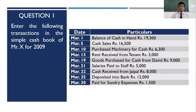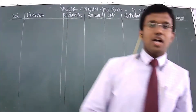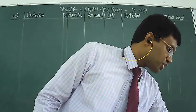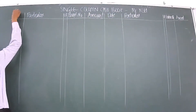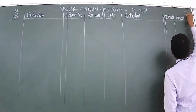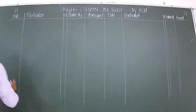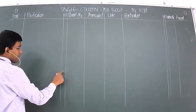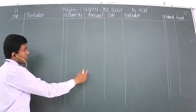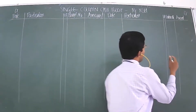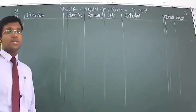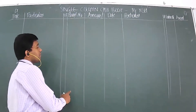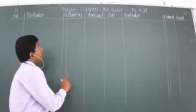Let's go about preparing the transactions. We have prepared the format of the single column cash book here on the board. This side of the cash book is called the debit side and this side is called the credit side. It is symmetrical in nature. You have: date, particulars, LF (ledger folio), receipt number, amount on the debit side; and date, particulars, LF, voucher number, and amount on the credit side.